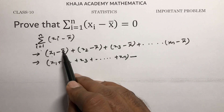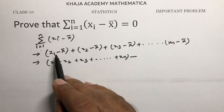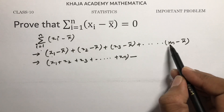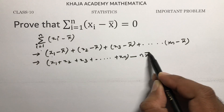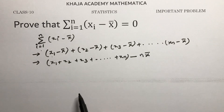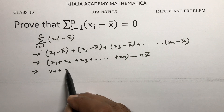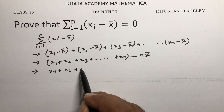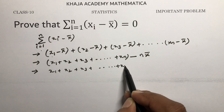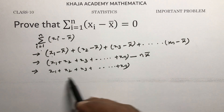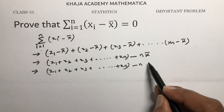Then we subtract X̄ for each observation — X̄ minus X̄ minus X̄ and so on — which gives n times X̄, since there are n observations. So the expression becomes X₁ plus X₂ plus X₃ plus so on Xₙ minus nX̄.